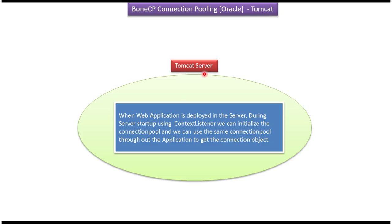Here you can see the Tomcat Server. Suppose if you are deploying a web application in the Tomcat Server, during the server startup we can call the Context Listener, and using that Context Listener we can initialize the connection pool. Once the connection pool is initialized, throughout the application we can use the same connection pool. And from that connection pool we can get the connection object and communicate to the database.